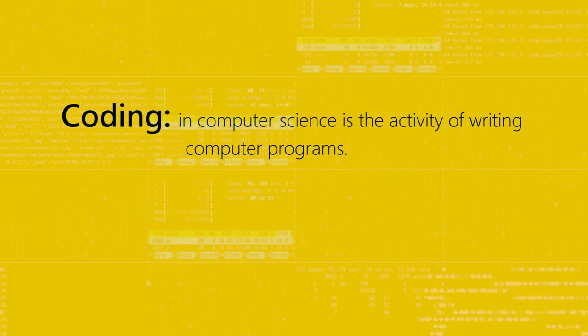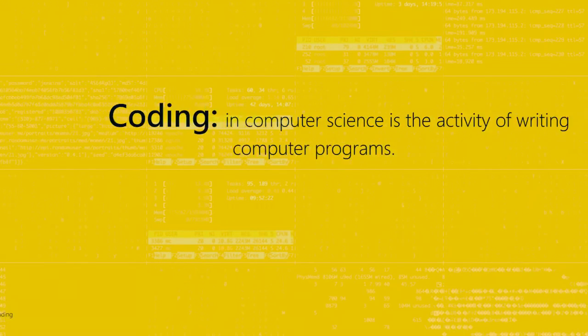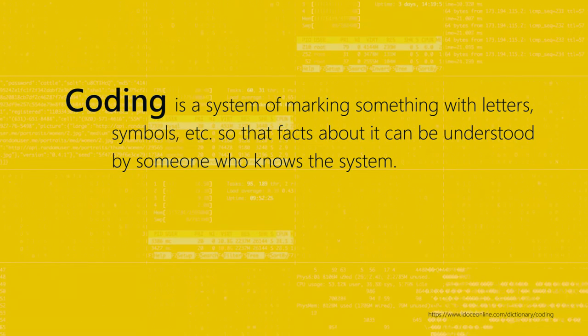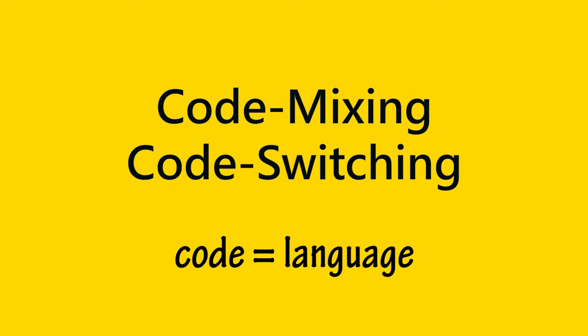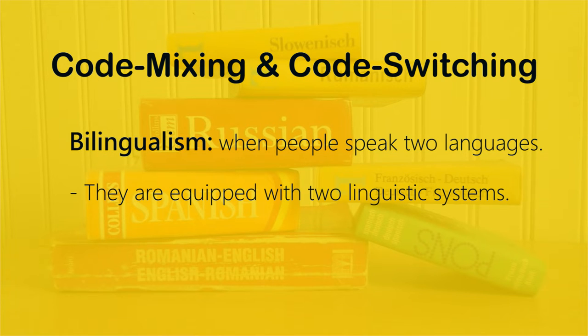You've heard coding in the sense of programming — people say 'I do coding,' which means computer programming. When you do coding, you are able to write and understand programs in a computer language, because a language can be a code. When you talk about code mixing and code switching, the word 'code' means language — people switch their language and mix their code. This applies to people who are at least bilingual, speaking at least two languages, equipped with two linguistic systems, two different codes.